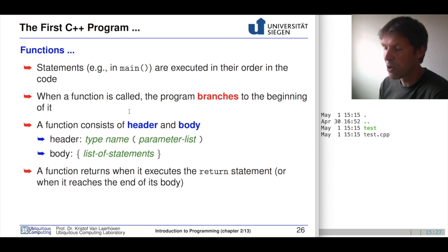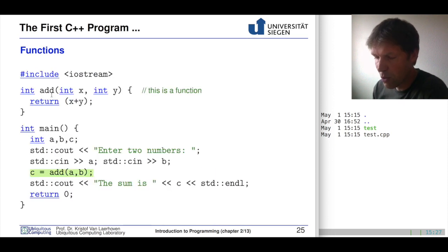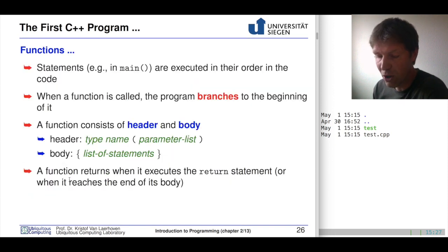Now when a function is called the program branches to the beginning of it. That means the program goes straight to the beginning of the function. And our function consists usually of a header and a body where the header is the type, the integer for our add function, the name, add for our add function, and a list of parameters. In this case, our x and our y. We also have a body, which is then the list of statements that need to be executed when you call this particular function. And a function then returns when it executes the return statement.